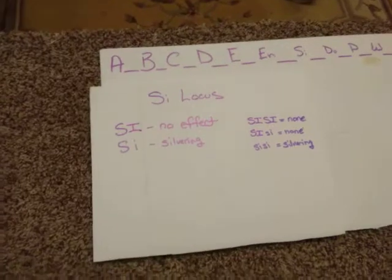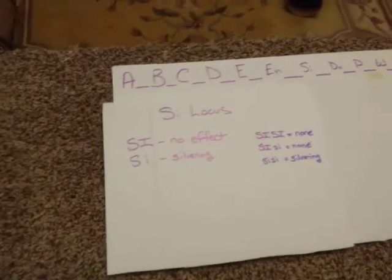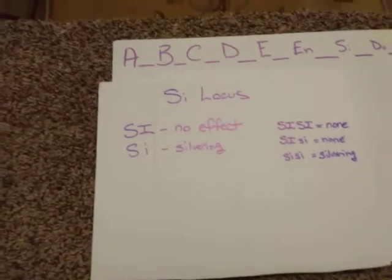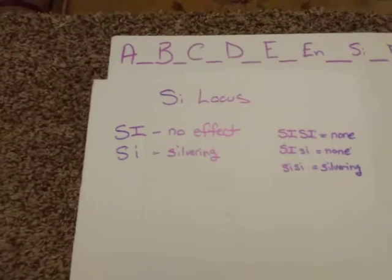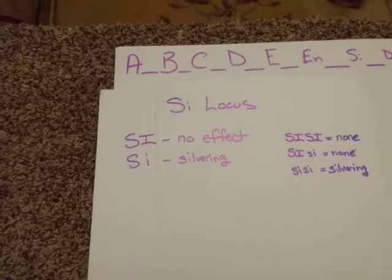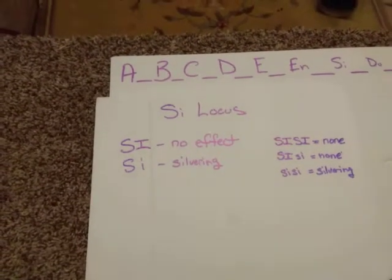We have capital SI which results in no effect. It is also the dominant allele. Then we also have the lowercase si for silvering, and that means that the silver ring is created by the recessive allele.